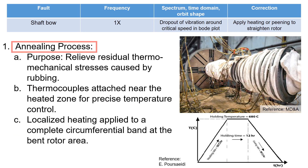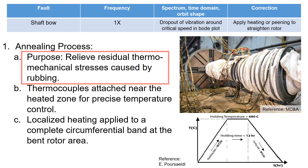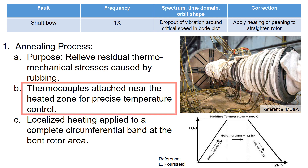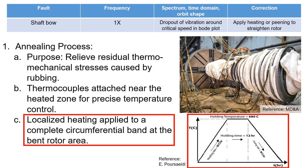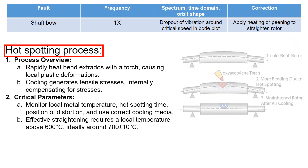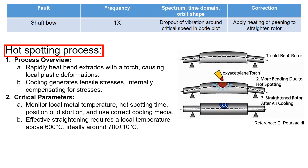To address the shaft bowing issue, it typically begins with an annealing process. The purpose of annealing is to relieve residual thermomechanical stress caused by rubbing. During the annealing process, thermocouples are attached near the heated zone for precise temperature control. The figure on the bottom right shows how the temperature is managed during annealing. The localized heating is applied to a complete circumferential band at the rotor area. After completing the annealing process, runout is reassessed before proceeding to the hot spotting stage.